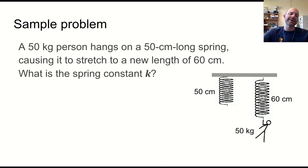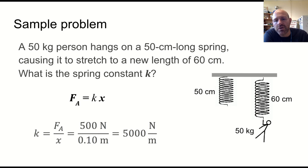So let's do a quick example problem of how we might apply this to a spring force. So a 50-kilogram person hangs onto a 50-centimeter long spring, causing it to stretch to a new length of 60 centimeters. What's the spring constant? Well, this is a Hooke's law situation. You applied 500 newtons of force. The spring stretched 10 centimeters or 0.1 meters. This gives us 5,000 newtons per meter of spring force or of spring constant.